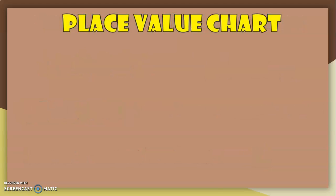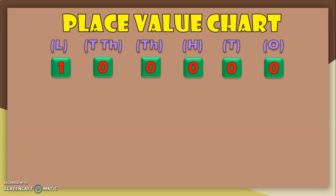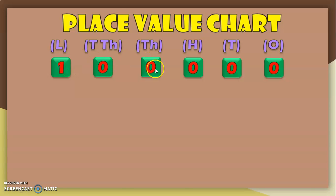Let us put this in the place value chart to understand it better. When you put the number 1 lakh in the place value chart, we have a 1 in the lakhs place, 0 in the 10,000's place, another 0 in the 1,000's place, another 0 in the 100's place, another 0 in the 10's place, and another 0 in the 1's place. So we have seen place values: 1's, 10's, 100's, 1,000's, 10,000's, and the new place value — lakh.